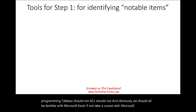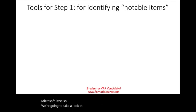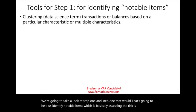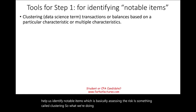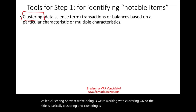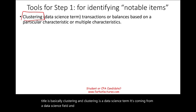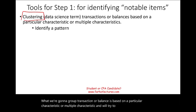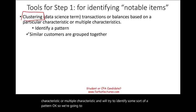Step one is going to help us identify notable items — basically assessing the risk — and this is called clustering. Clustering is a data science term from the data science field. What we do is group transactions or balances based on a particular characteristic or multiple characteristics, trying to identify some sort of a pattern. The purpose is to group similar customers together.